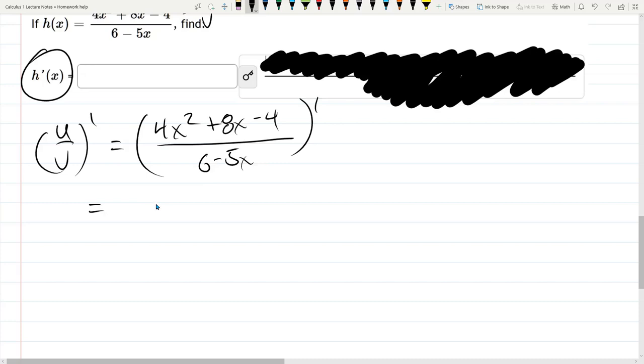So we're taking the derivative. So we have u prime v minus u v prime divided by v squared. Of course u is 4x squared plus 8x minus 4, v is 6 minus 5x.